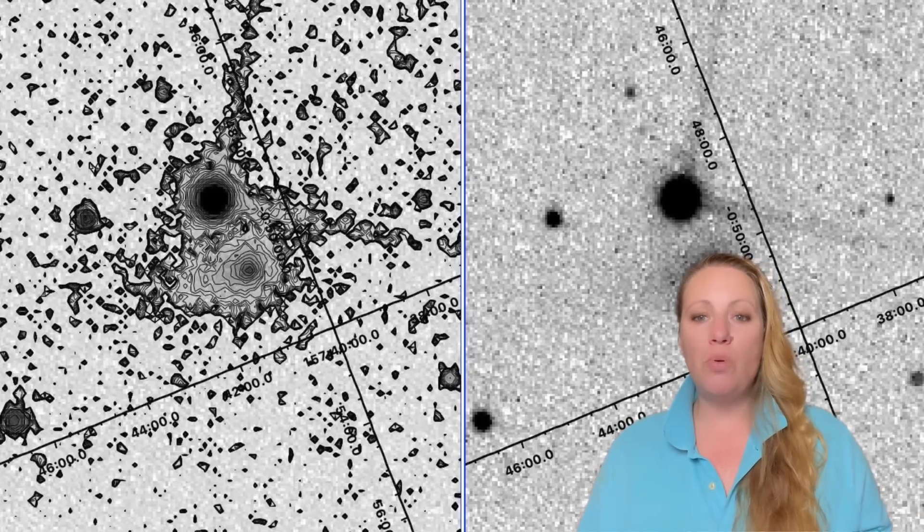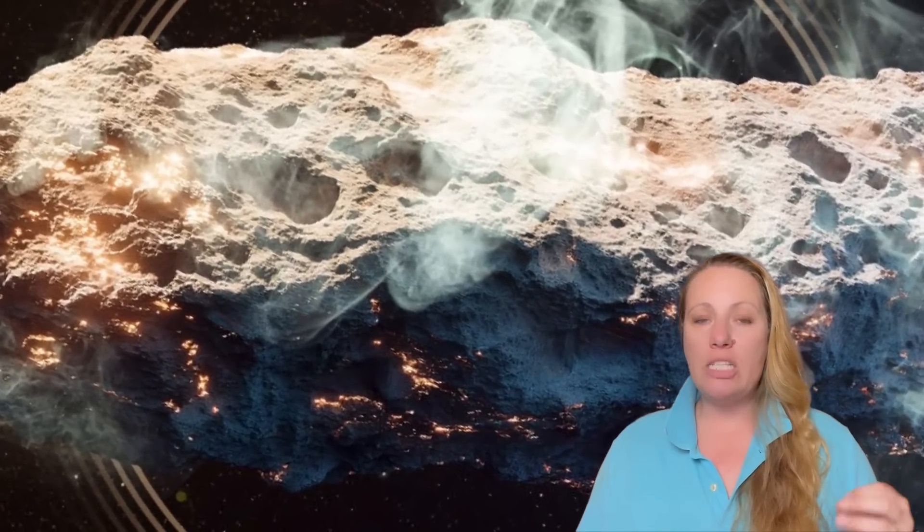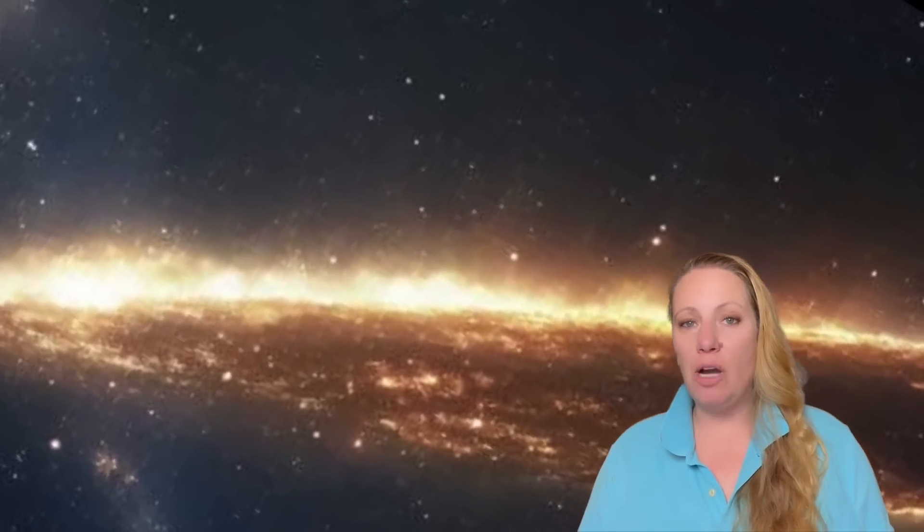So what would we expect from a regular comet? When the sun heats a comet, ices on the comet turn directly into gas. This process is called sublimation. So nothing's melting, turning into water, it's turning into gas. Ice near the surface, usually CO2, starts to vaporize. The gas flows out at a speed that is set by its own temperature. At the distance of 3I Atlas from the sun, about twice the Earth distance, the gas can only go about 0.2 kilometers per second, roughly 450 miles per hour.